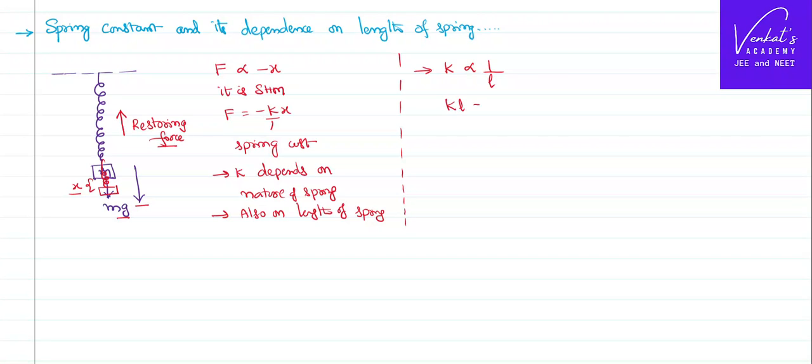So K into L is equal to constant. So spring constant is inversely proportional to length. Let us try to understand the meaning of that in a little different way.